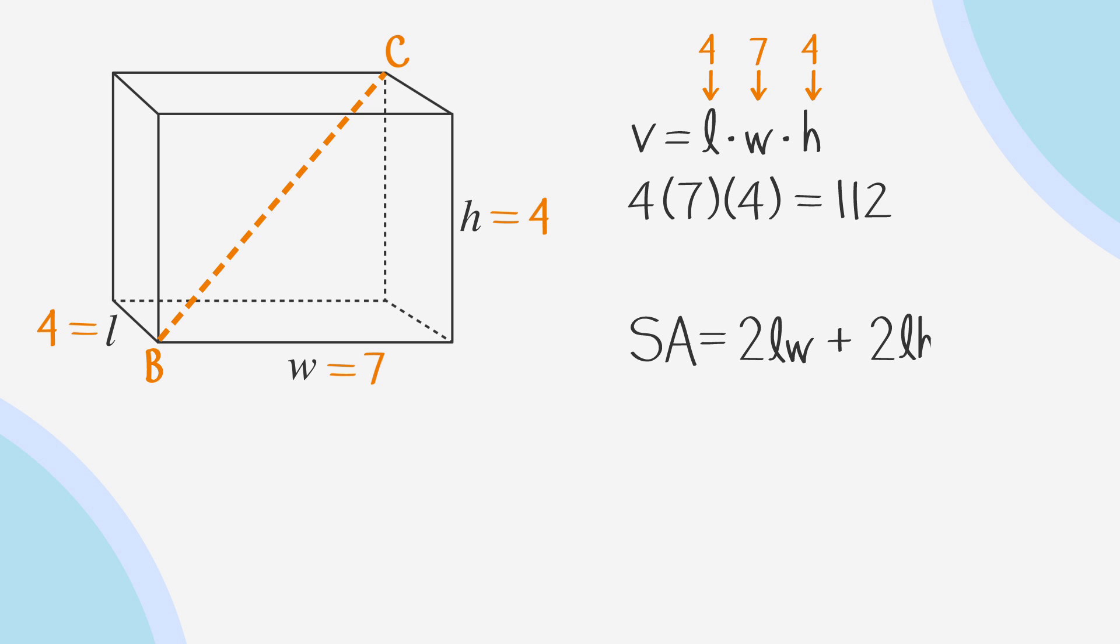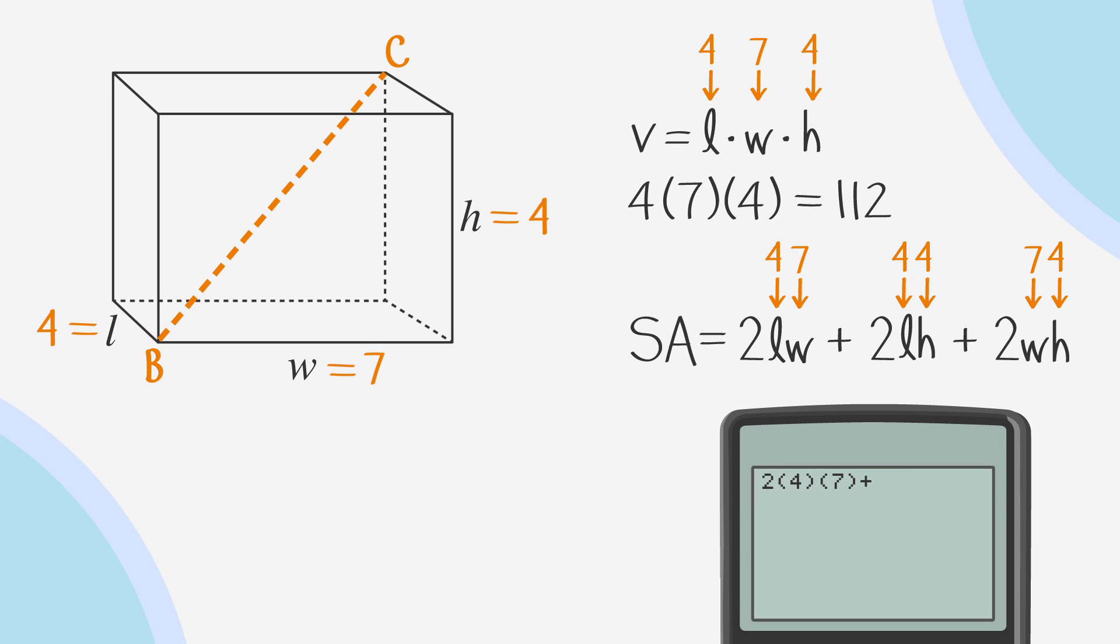The surface area is 2 times the area of each face. Plugging in 4 for the length, 7 for the width, and 4 for the height, and using our calculator, we get 144 for the surface area.